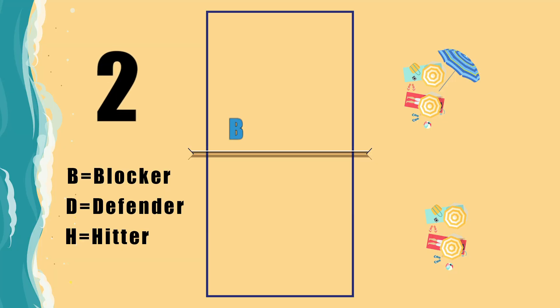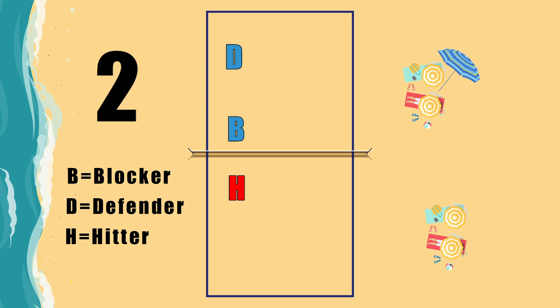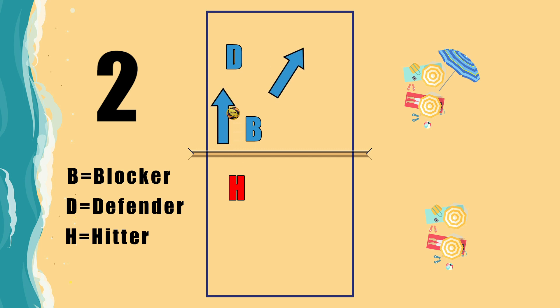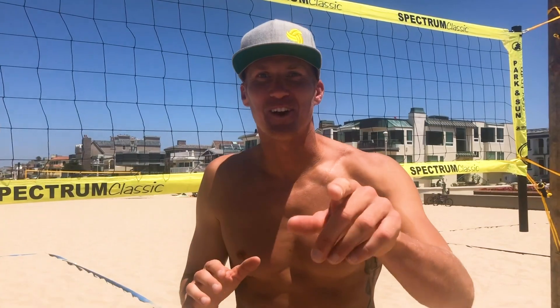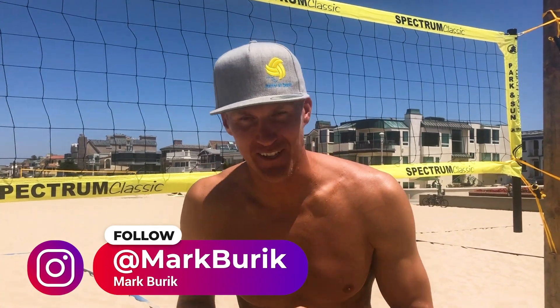The next play is a two, or for easy explanation, an angle block. An angle block is the exact opposite of the line block. The blocker sets themselves up to take away the cross court from the attacker. For a two block or angle block, the blocker takes cross court and the defender takes the line.